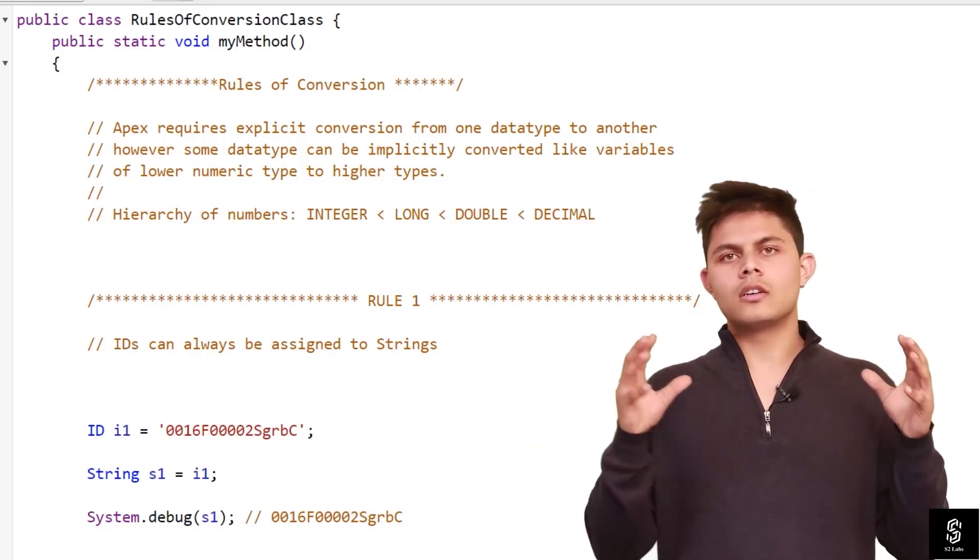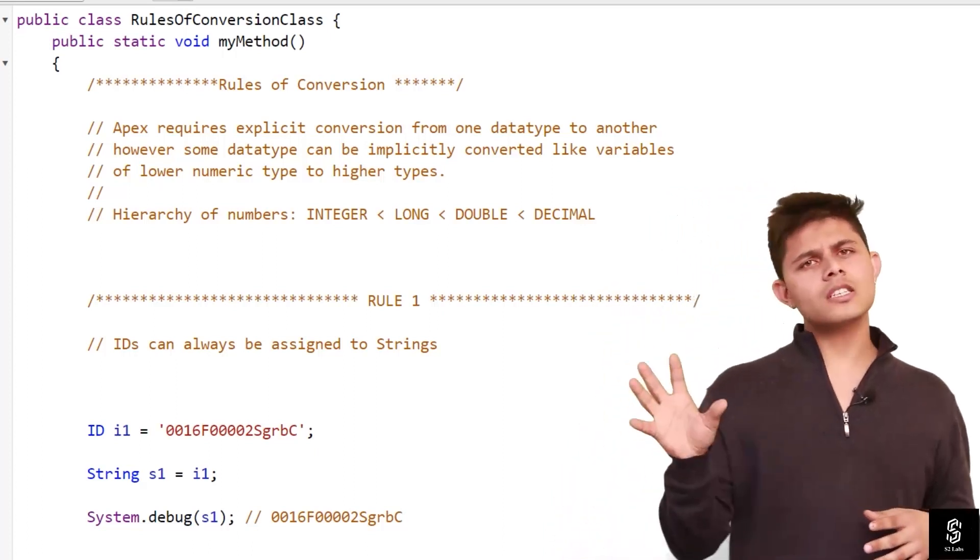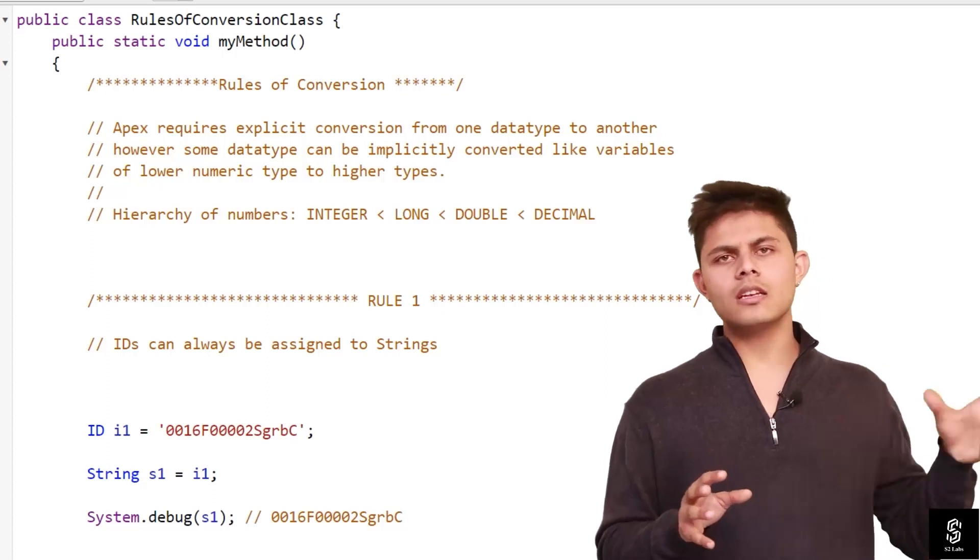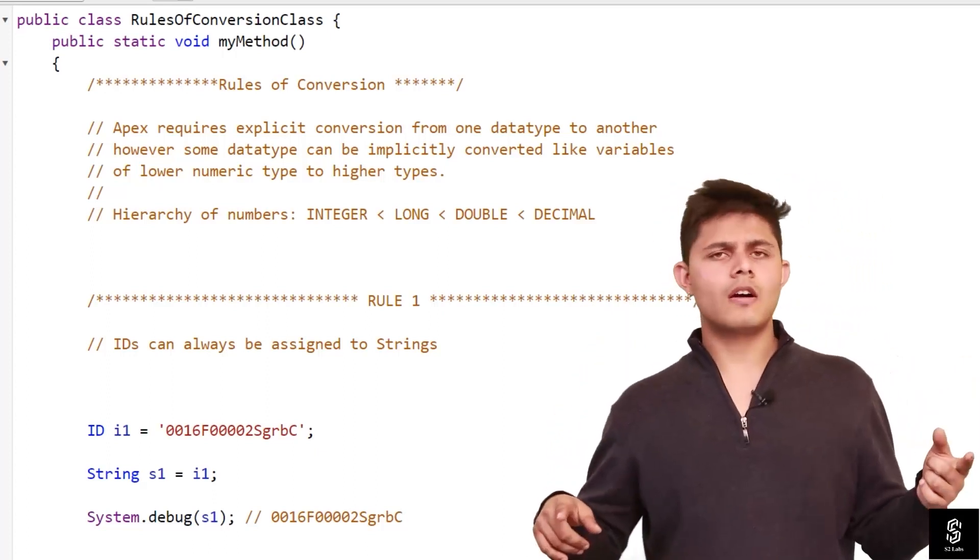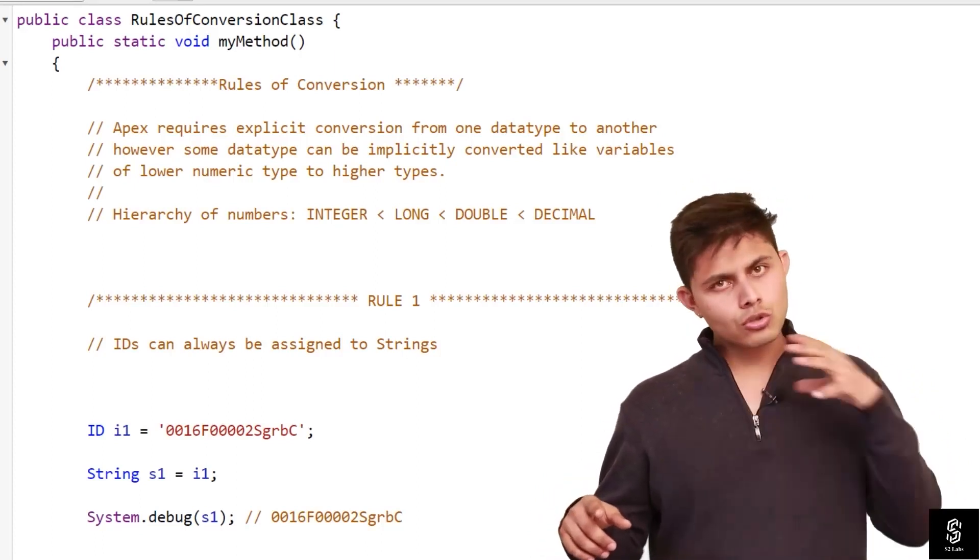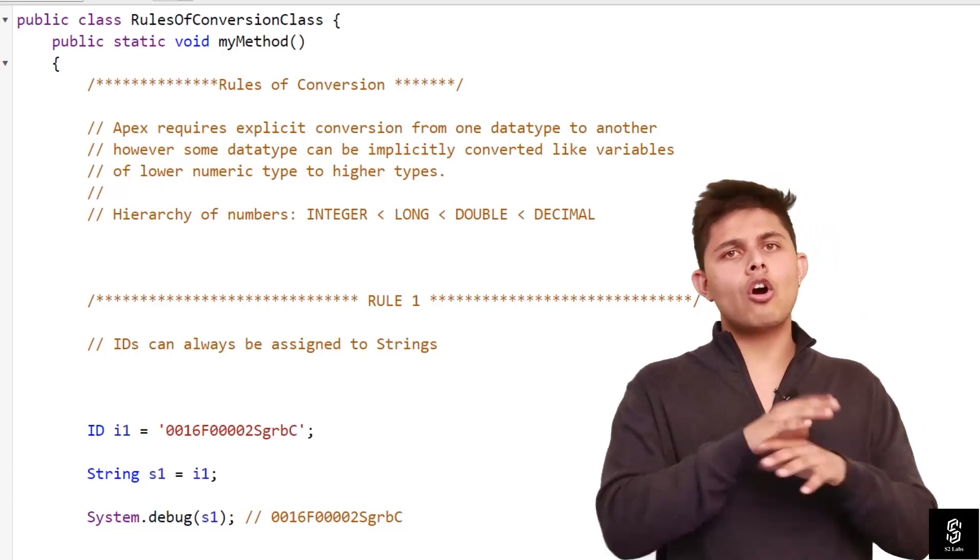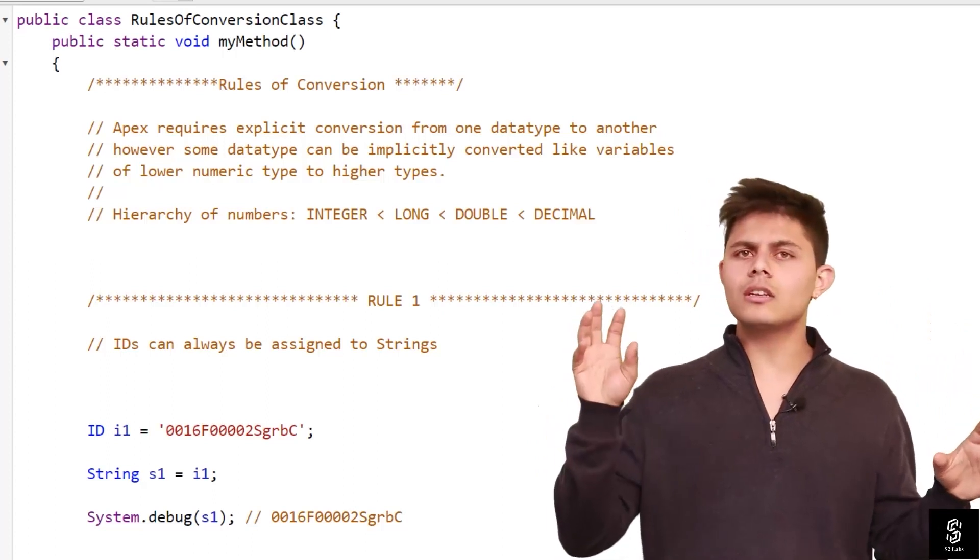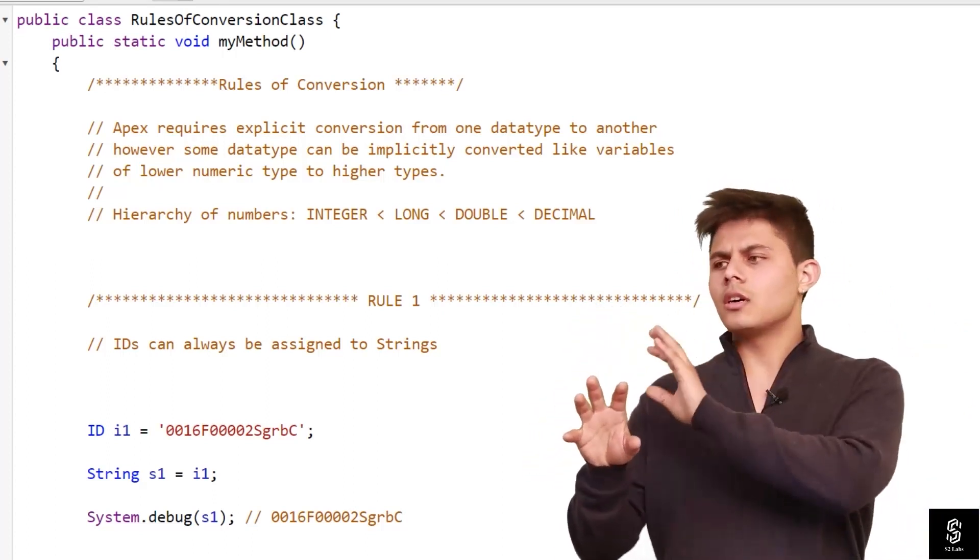Let me explain to you. The smallest when it comes to numeric types is integer, then long, then double, and then decimal. So if you're trying to store an integer value into a double value, that same value will get converted into double automatically. There is no explicit type cast required. But if you're trying to store a double value into an integer variable, like 2.8 you want to store into integer i,